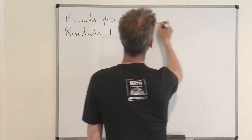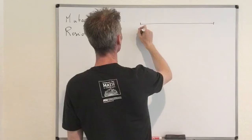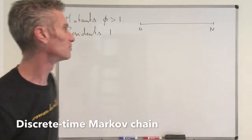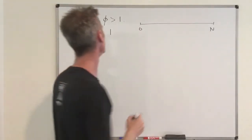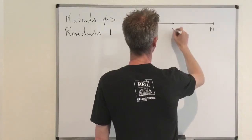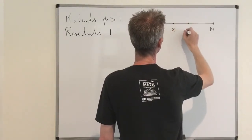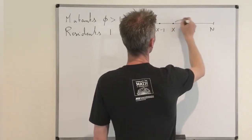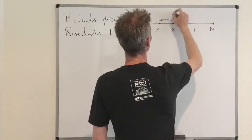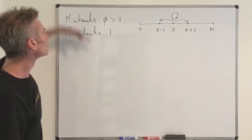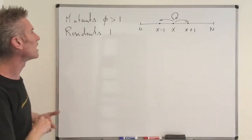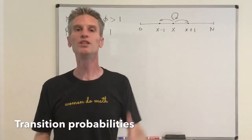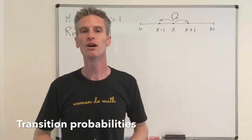If you keep track of the number of mutants in the system, this gives you a discrete-time Markov chain which takes values in the state space {0, 1, ..., N}, where N is the total number of individuals. From any state X, you can jump to X+1 or X-1, but you can also stay at X. Everything we have to do to simulate this process is find the transition probabilities, which we already did in a previous video.